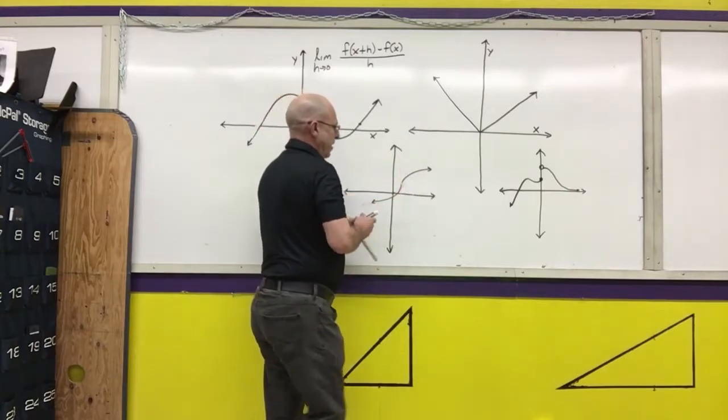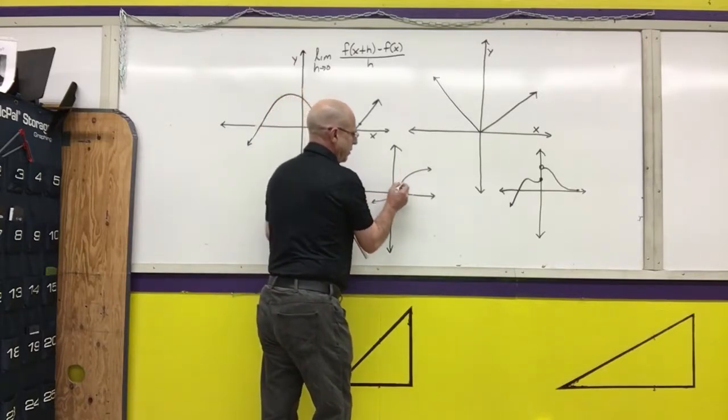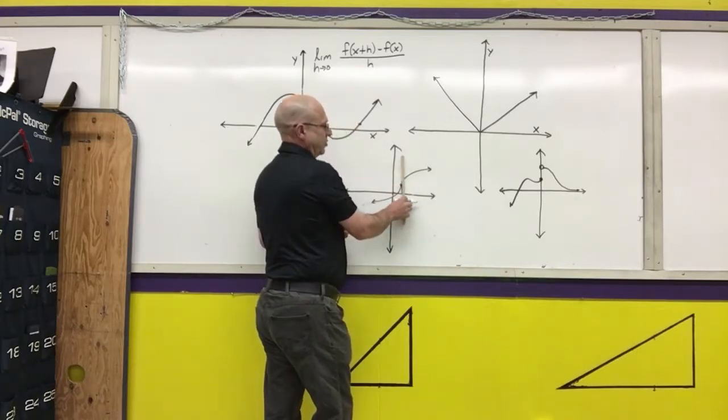So at this x point right here, where it goes through a vertical tangent, we would not be able to differentiate that function.